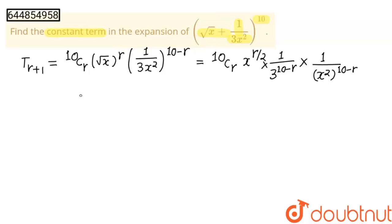So this will become 10Cr, we will write this, 1 upon 3 to the power 10 minus r and this will be x to the power r by 2 minus this whole, 2 into 10, 20 minus 2r.